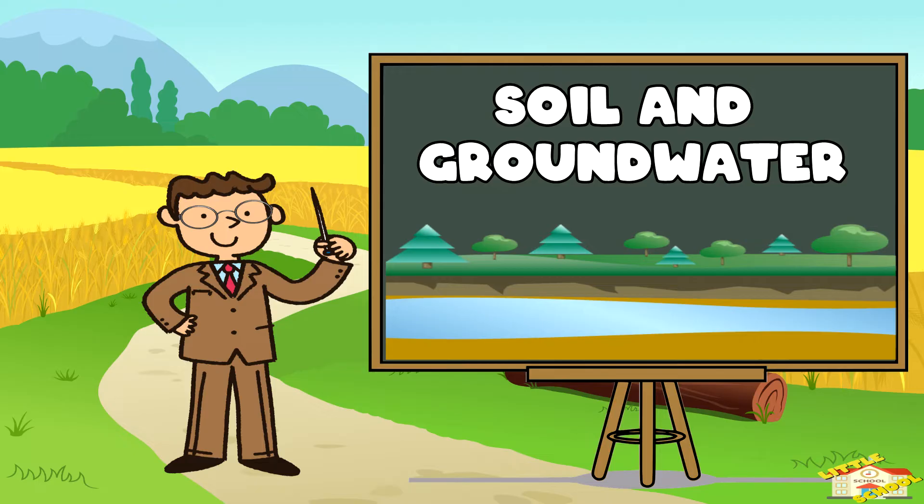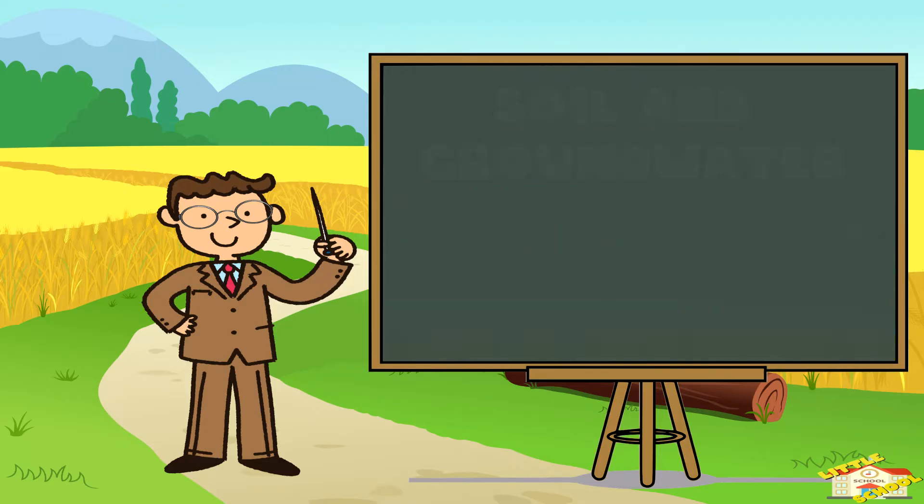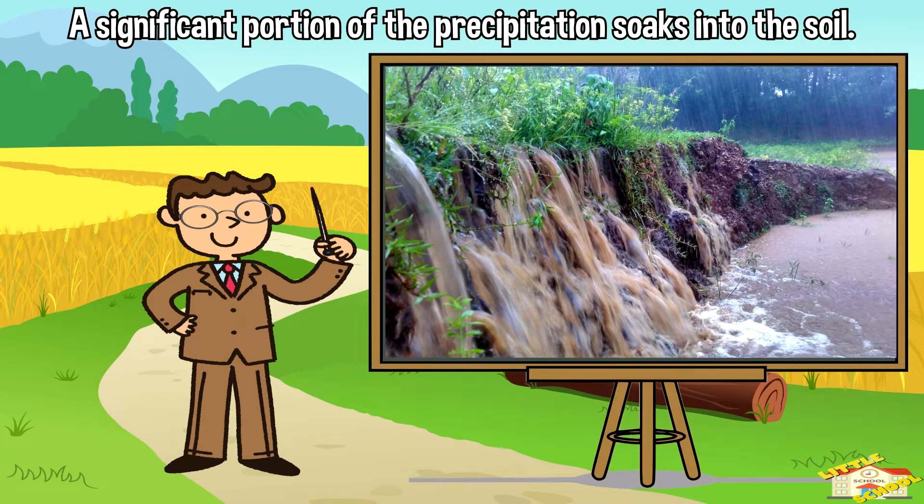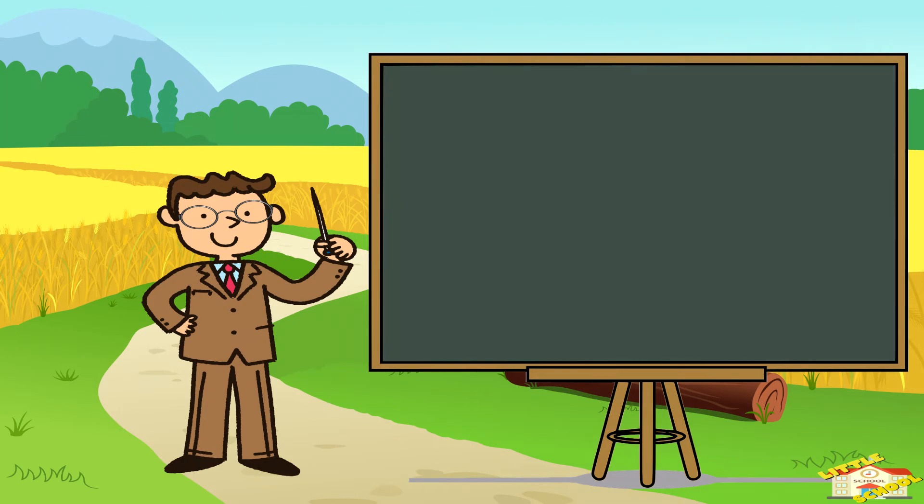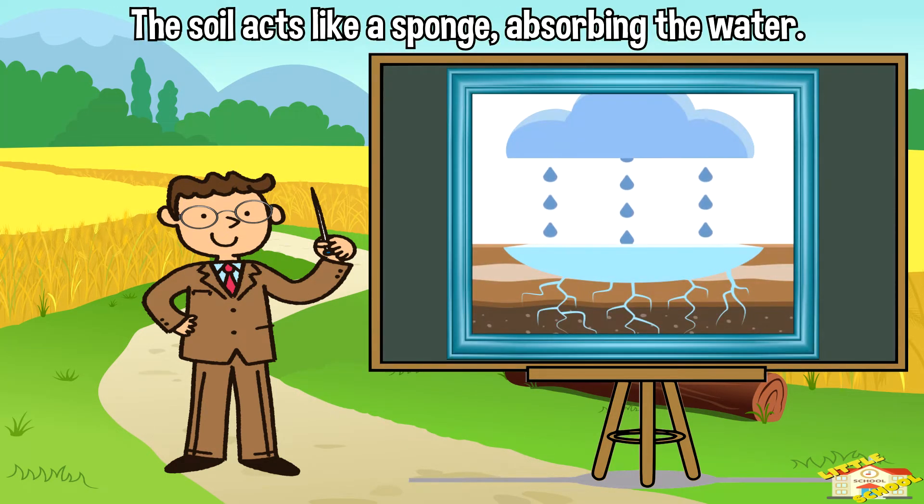Soil and groundwater: A significant portion of the precipitation soaks into the soil. The soil acts like a sponge, absorbing the water.